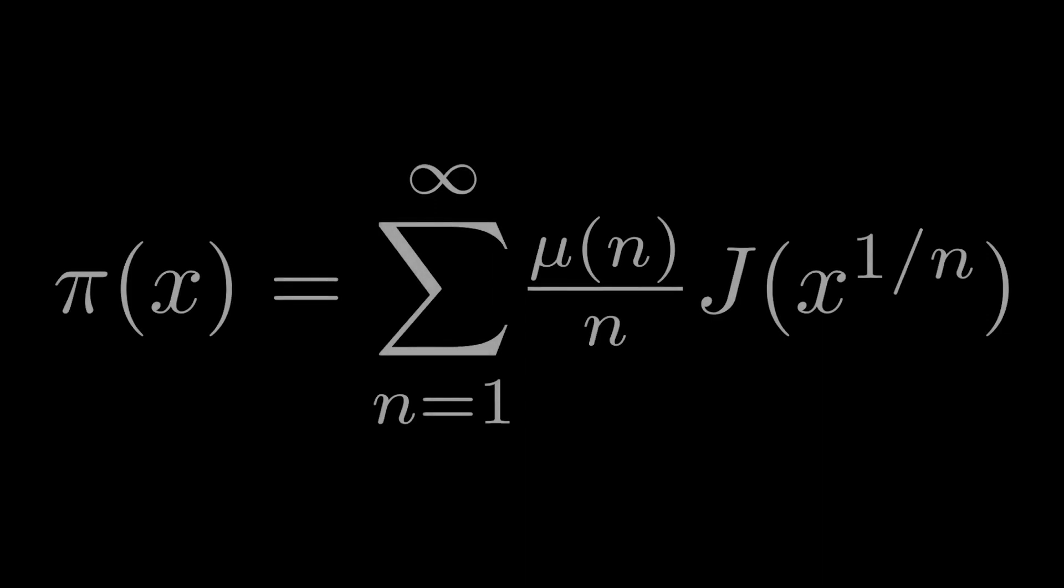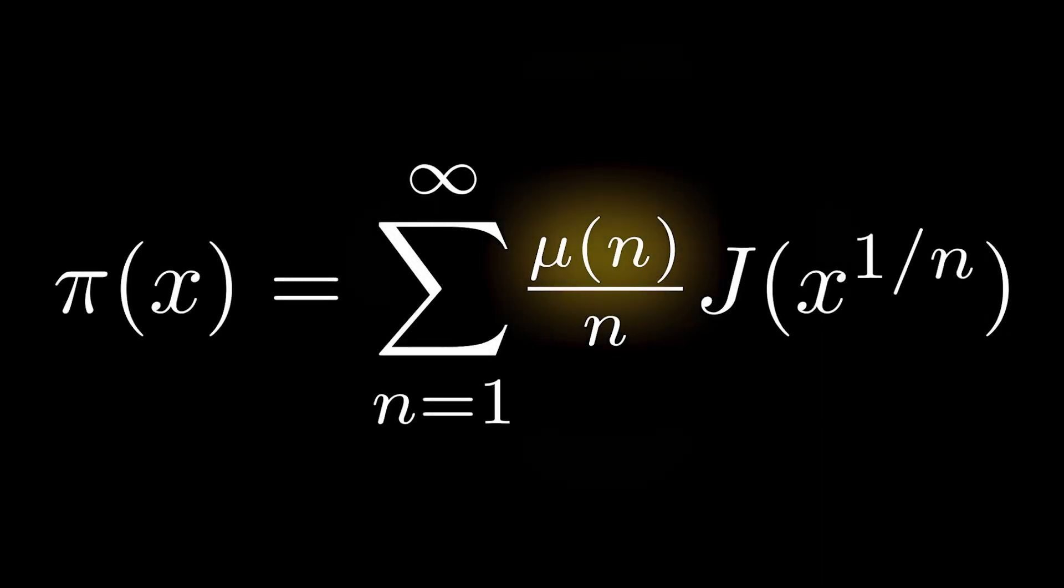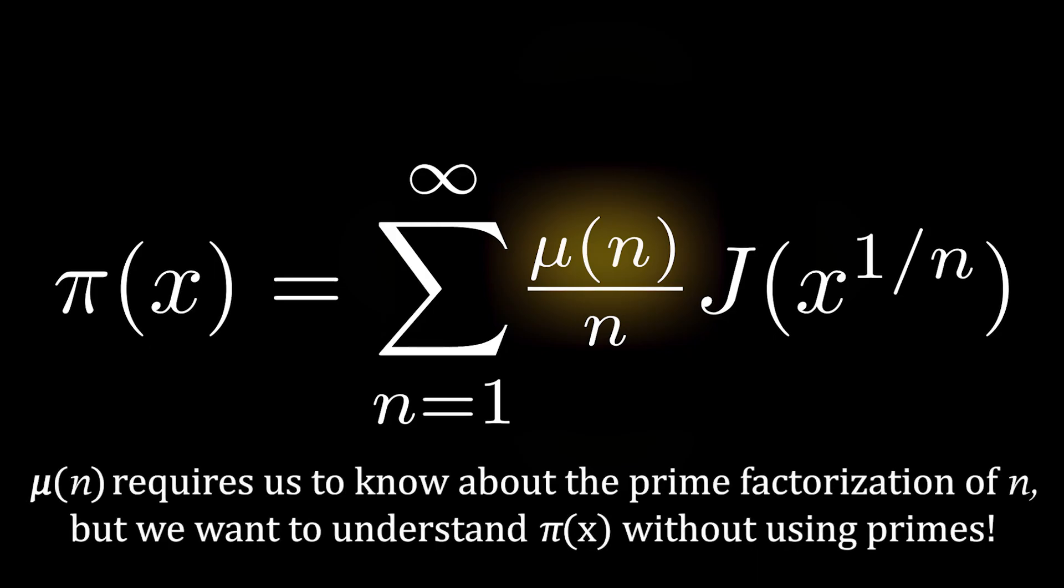You may find this unsatisfying because of the presence of the Möbius function. We want the right-hand side of the equation to be completely independent of having to know anything about prime factorizations, because we want to understand the prime counting function with a formula that doesn't itself require knowledge of primes, but the Möbius function requires us to know about the prime factorization of n.